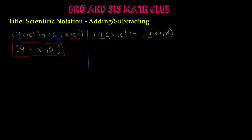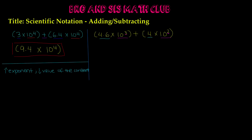In order to add or subtract in scientific notation, the exponents of our bases have to be the same. There's a tip to remember: if you want to increase the exponent, you're going to decrease the value of the constant. So if we have 10 to the 2nd and we want to make it 10 to the 3rd, we need to decrease the value of the constant.